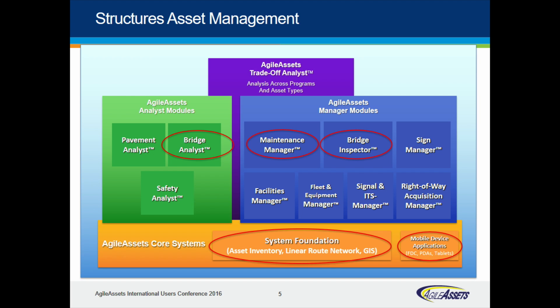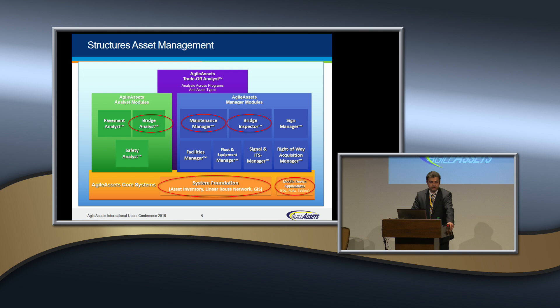For structure asset management, there are five components of the Agile Suite utilized: system foundation, mobile device application, bridge analyst, maintenance manager, and bridge inspector. On top of this, the structure asset management will also be used in the Agile asset trade-off analyst.